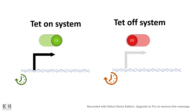Here is a quick summary: in the Tet-On/Tet-Off system, both systems are used to spatiotemporally regulate gene expression, but one activates the gene and the other stops it. Tet-Off is for stopping gene expression; Tet-On is for activating gene expression.